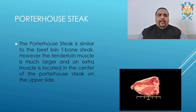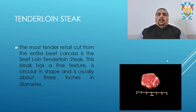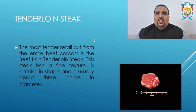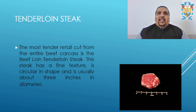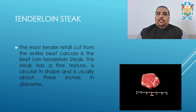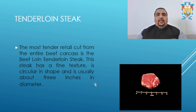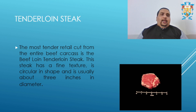Next we come to the tenderloin steak — the Mercedes of steaks. The most tender retail cut from the entire beef carcass is the beef loin tenderloin steak. This steak has a fine texture in a circular shape and is usually about three inches in diameter. It is the meat found inside the ribs, making it the most tender part.